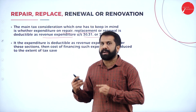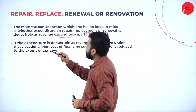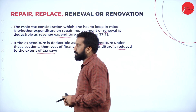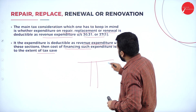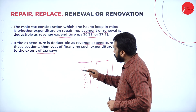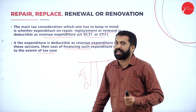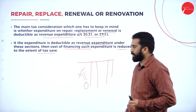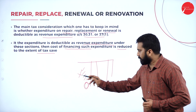You will get only theory for this — it may be 5 marks or 10 marks. If the expenditure is deductible as revenue expenditure under this section, then the cost of financing such expenditure is reduced to the extent of tax saved. Whatever you mention as revenue expenditure, it always saves your tax. In your profit and loss account, if you show more expenditure, your profit will be less and your tax will be less. If you don't show expenditure, your profit will be more and tax will be more. That's why repair, replacement, and renewal are called expenditures — we take them on the expenditure side, and the difference is called profit or loss, on which tax is calculated.